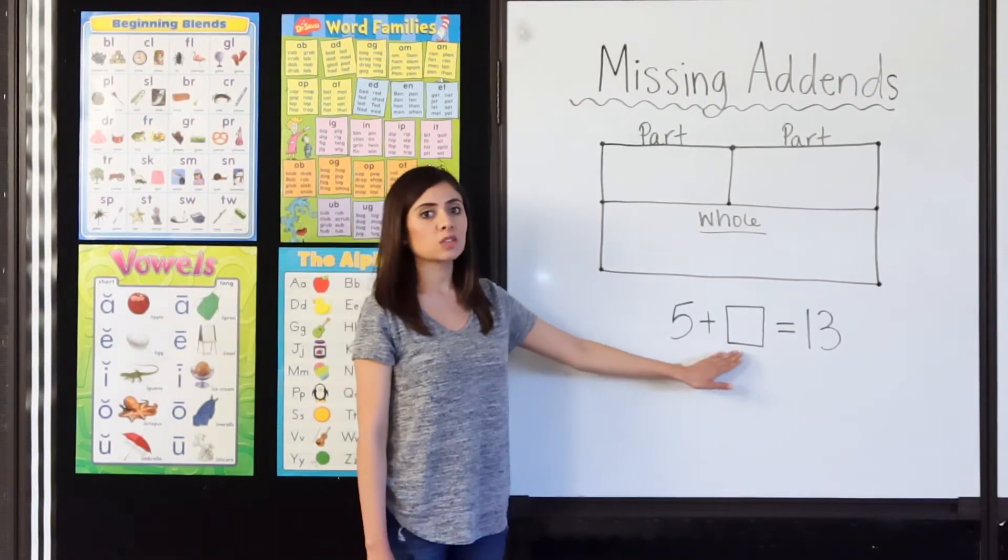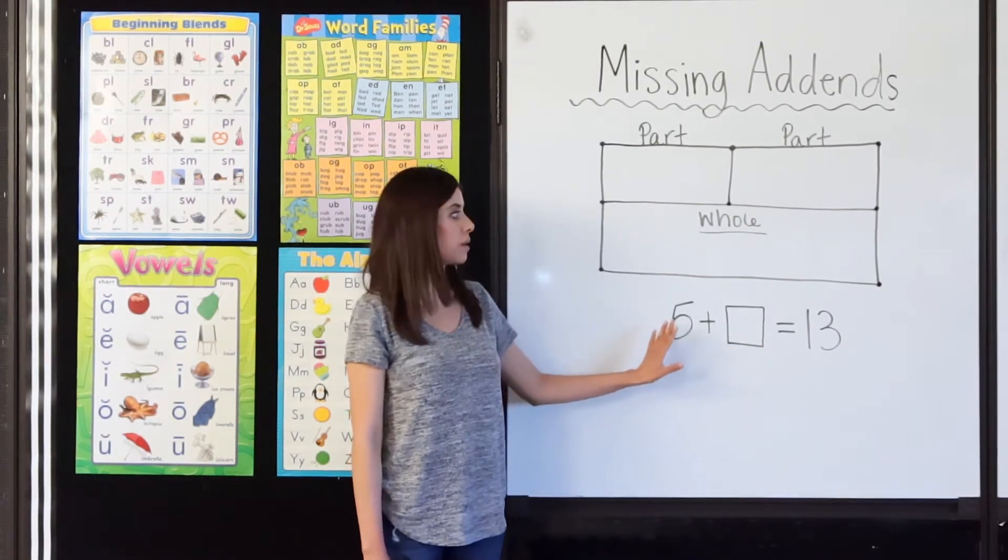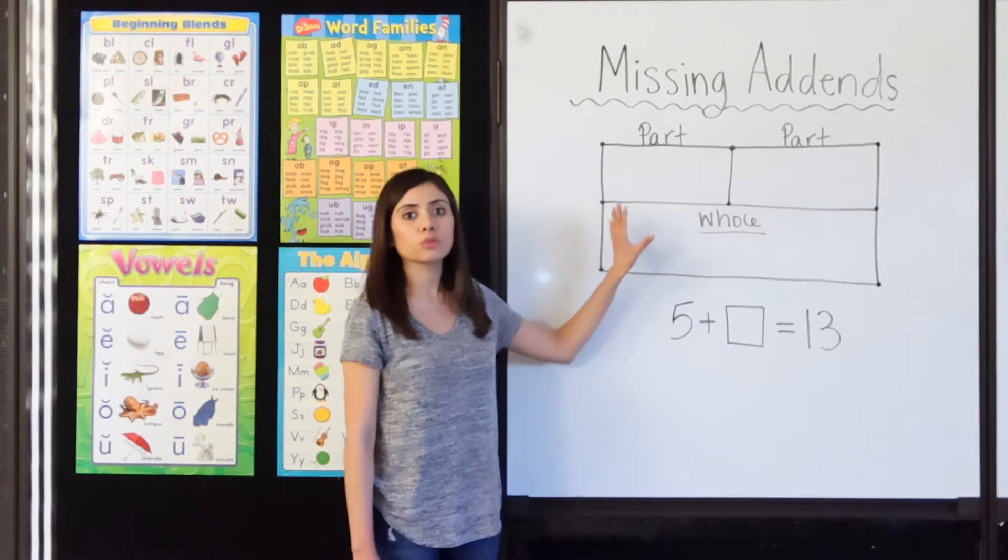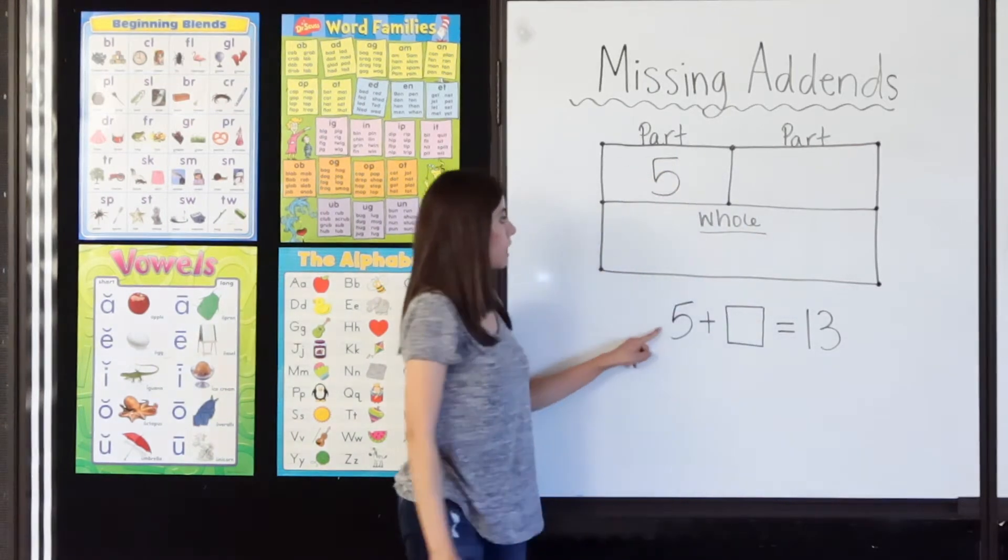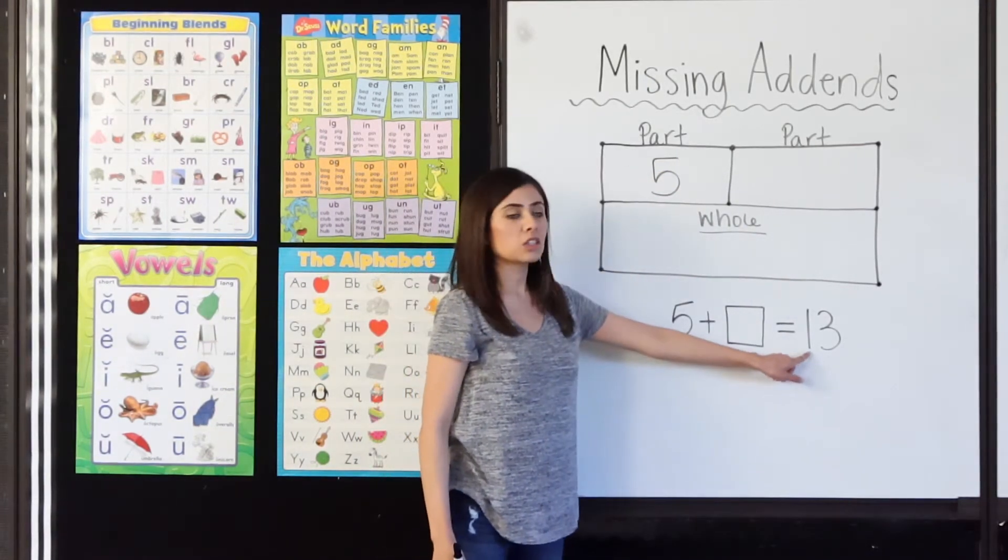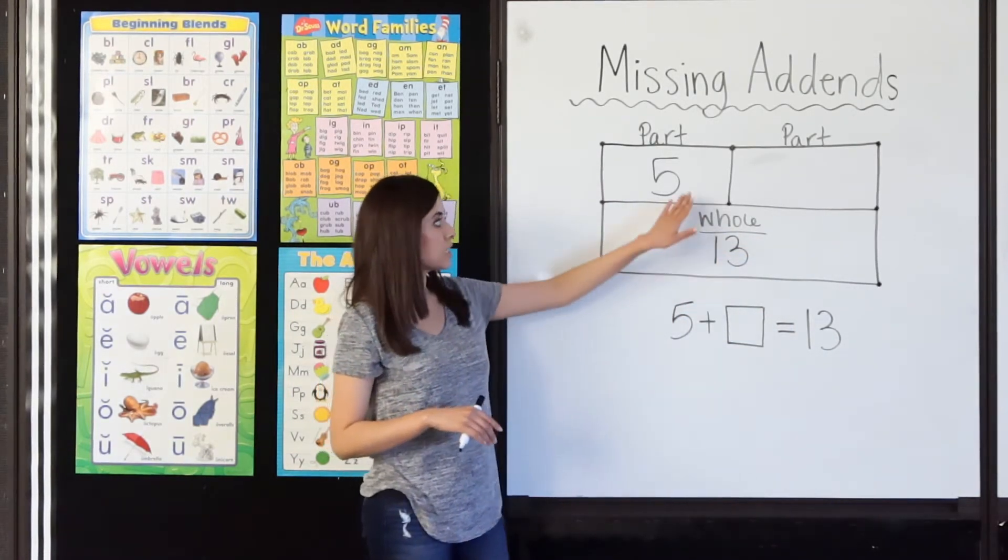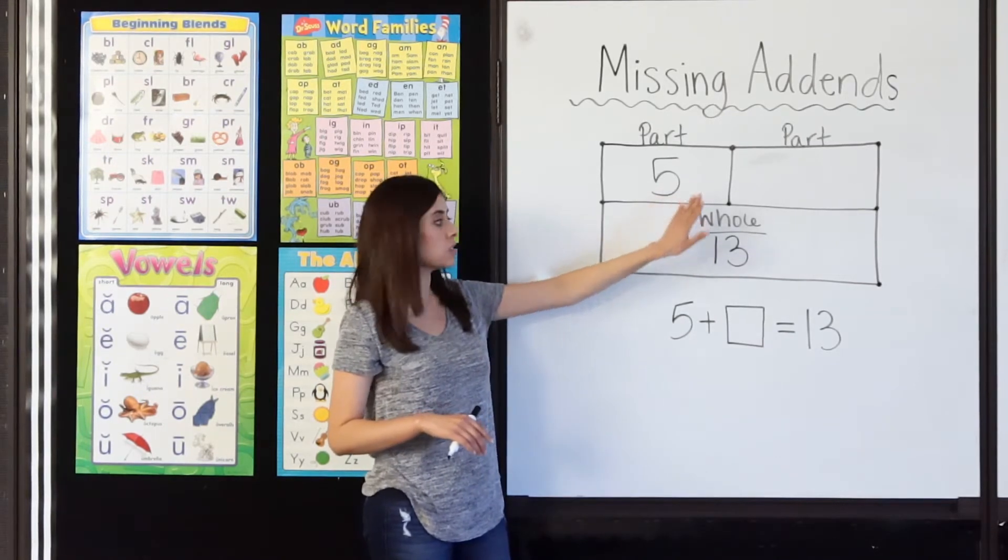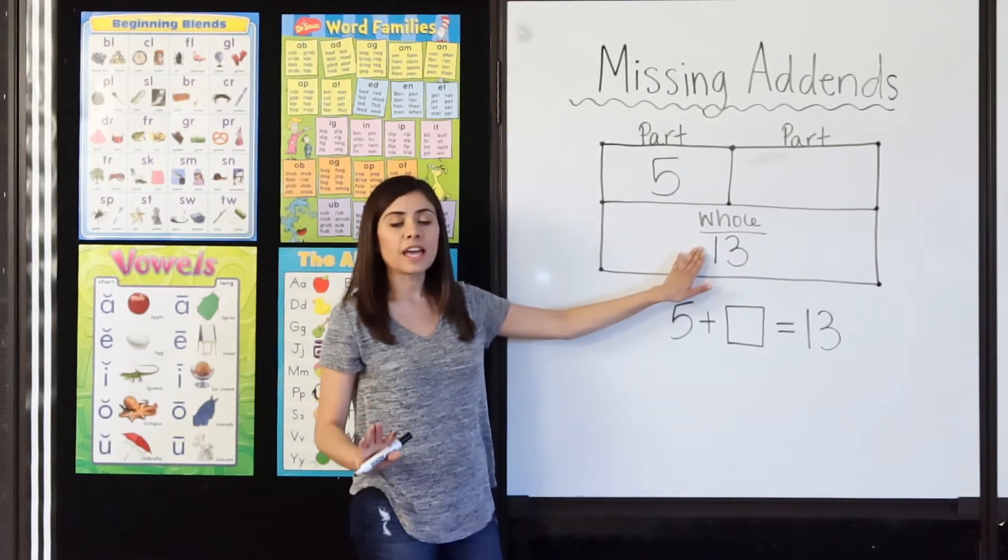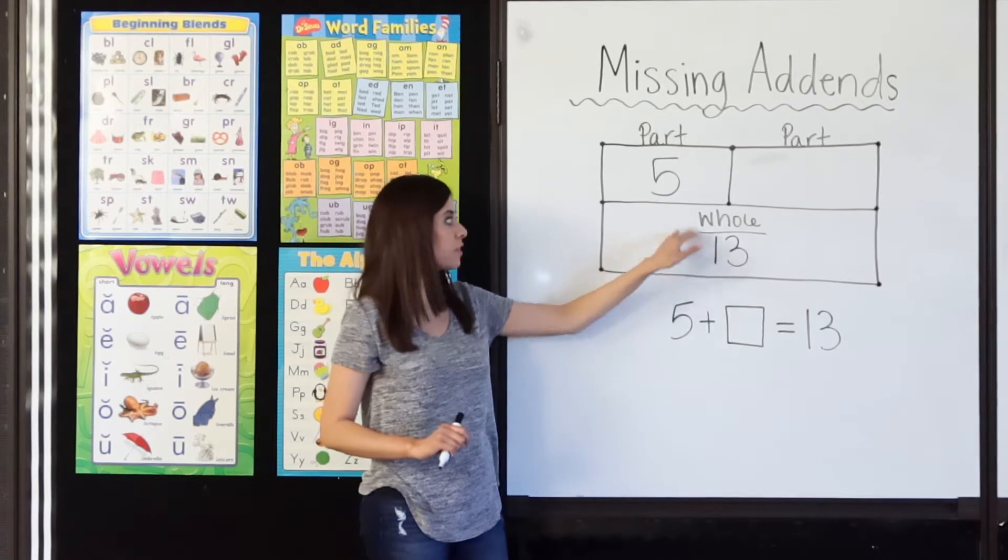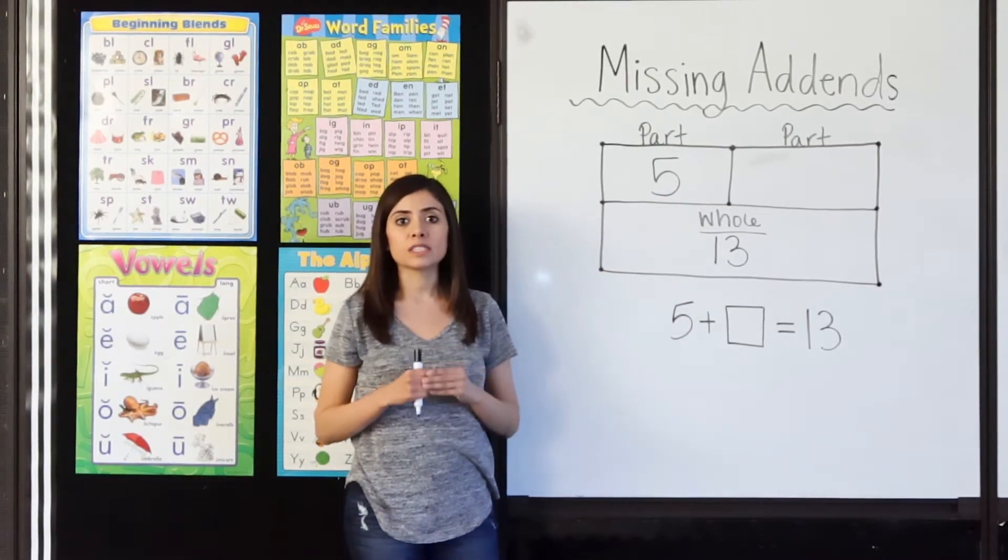I have 5 plus what equals 13. Let's go ahead and take the information we already know and put it in our part-part-whole chart. I know the first part is 5, so I will fill that in. And I know my whole is 13. Okay, so now what is the missing addend? To find out, I will start at 5 and count up until I get to 13. As I do so, I will draw circles. At the end, I will say how many circles I drew to get from 5 to 13. The number of circles we have is the missing addend.